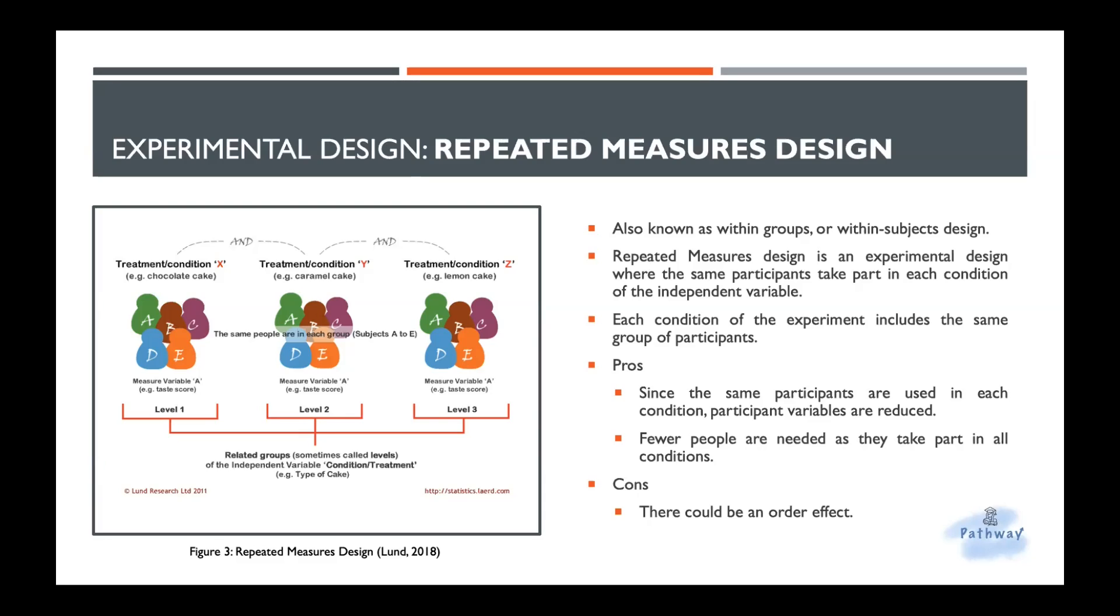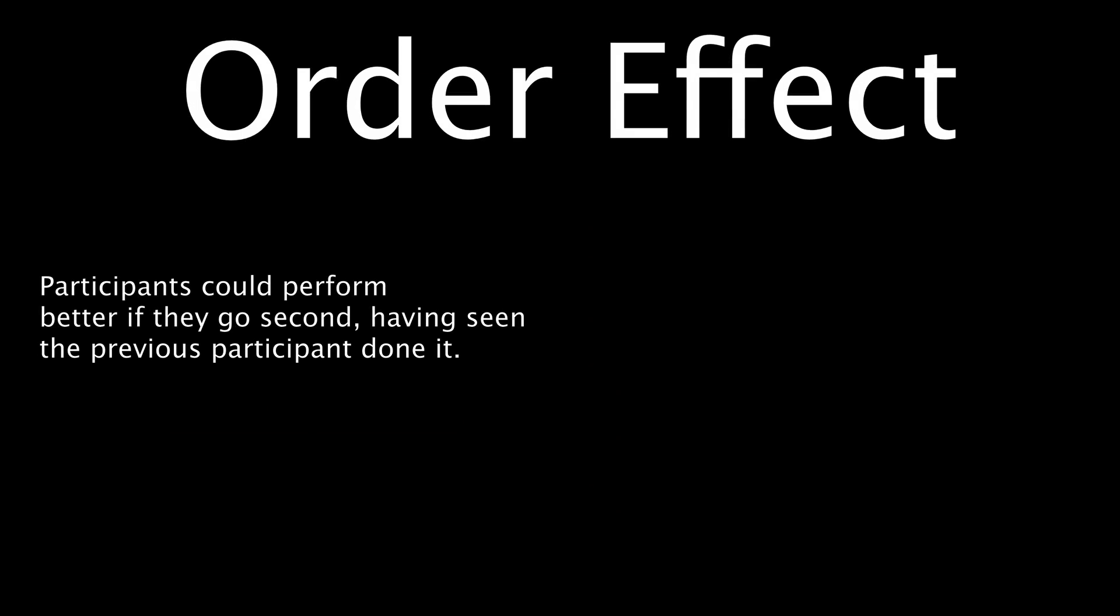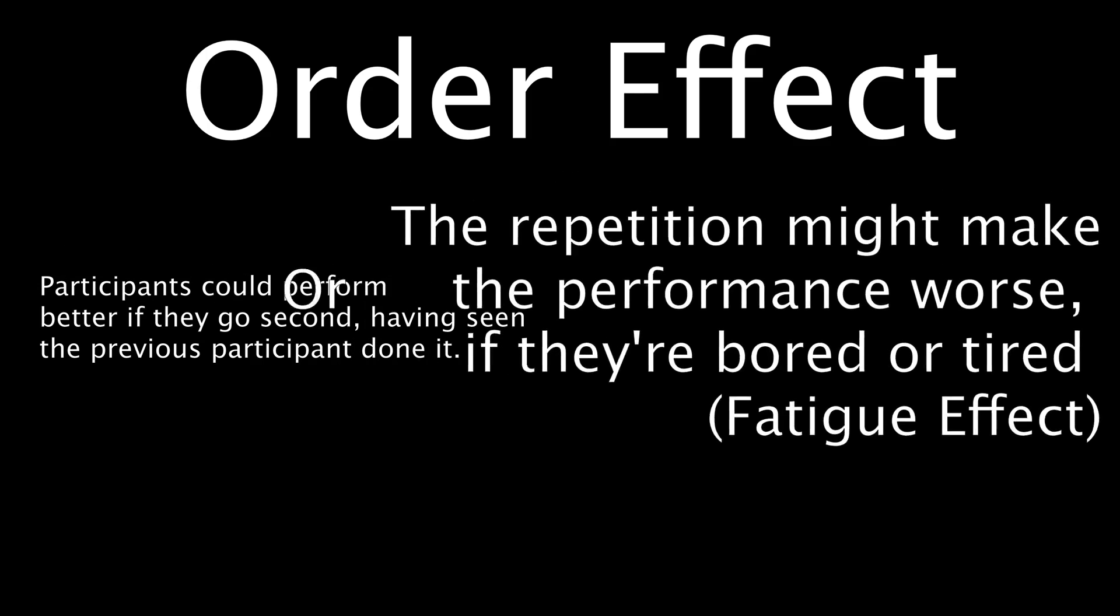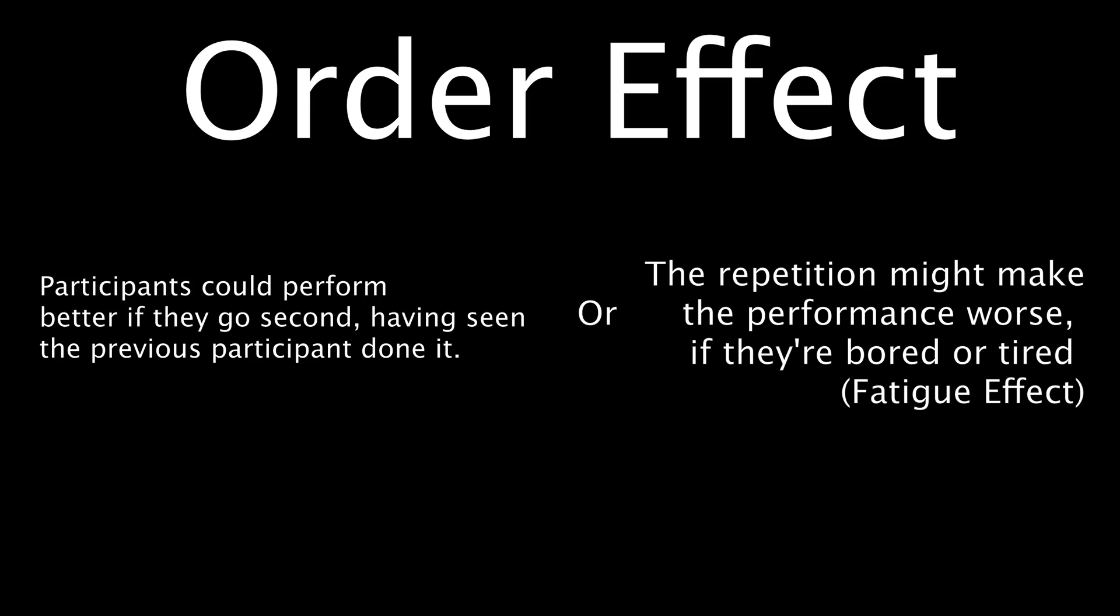The order effect is basically the practice and fatigue effects or the consequences of participating in a study more than once, which can cause changes in performance between conditions that are not due to the IV. The repeated performance could cause participants to improve because they have encountered the task before, so there's a practice effect there. Practice effect is a situation where participants' performance improves because they have experienced the experimental task more than once. So basically you get used to it. This matters because participants who were tested on a condition second would perform better than those who did it first.